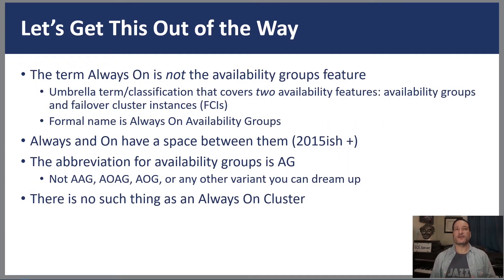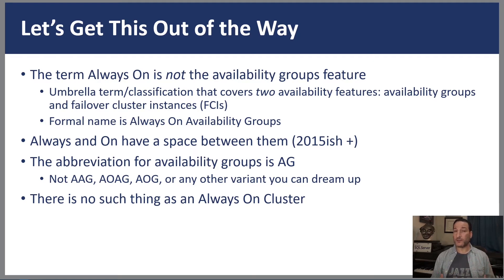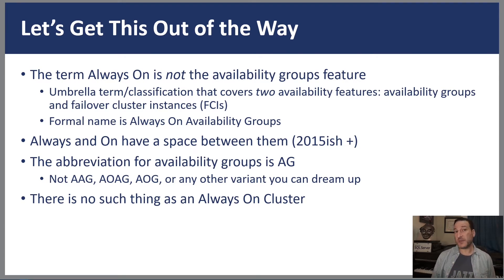I'm not going to spend a lot of time on this because it's not totally relevant to this talk, but anybody who knows me knows I'm a stickler for using the right name for things. 'Always On' is not the name of the feature. It's 'Always On Availability Groups' — its full formal name — or just 'Availability Groups.' The abbreviation is AGs. It's not AOAG, AAG, AOG, or any combination of that. Even 'Always On' these days has a space.